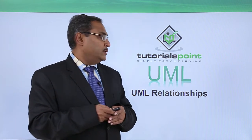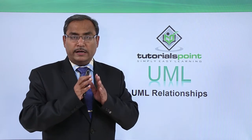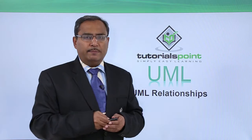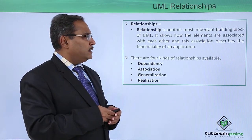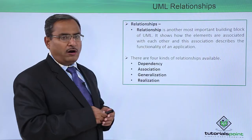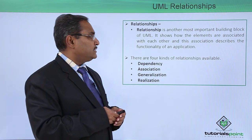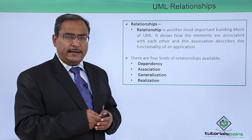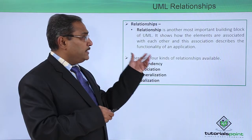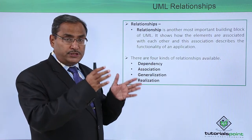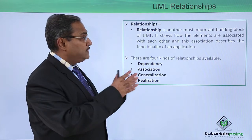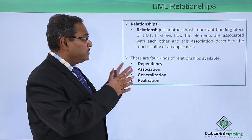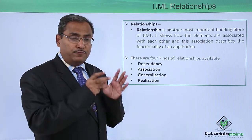UML relationships. Relationship is another most important building block of UML. It shows how the elements are associated with each other, and this association describes the functionality of an application. This relationship expresses how different building blocks of UML are getting associated with each other, and this relationship can be divided into four different categories.